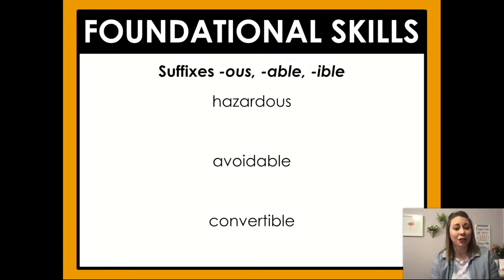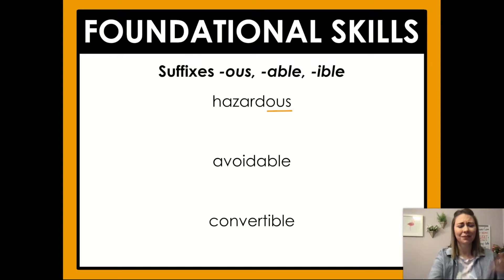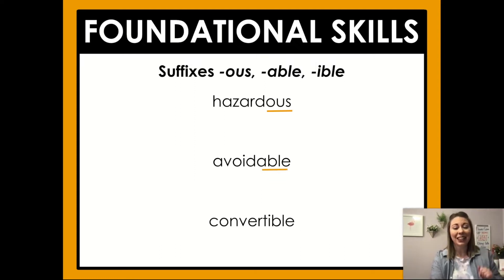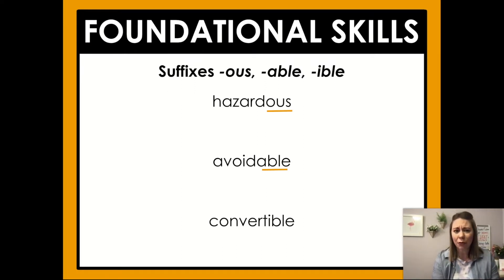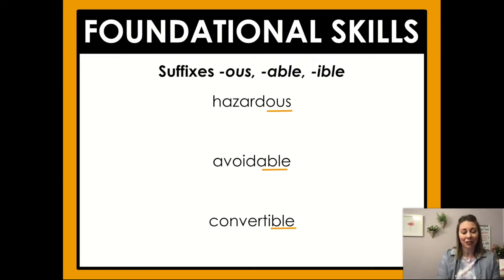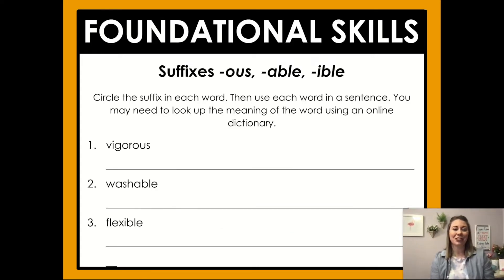Continuing on, we have some other words as examples. The word hazardous has the suffix OUS, so it means full of hazards or danger. Avoidable has the suffix ABLE, meaning able to be avoided — we can say this is an avoidable situation. And convertible, also able to be, with base word convert, so able to be converted. Have you ever heard of a convertible car? When the roof goes down, it's converted. For your foundational skills practice, circle the suffix in each word and then use each word in a sentence.